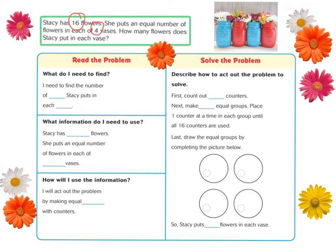Let's walk through our problem solving steps. I need to find the number of flowers Stacey puts in each vase. Stacey has 16 flowers and she puts an equal number of flowers into each of four vases. I will act out the problem by making equal groups with counters.